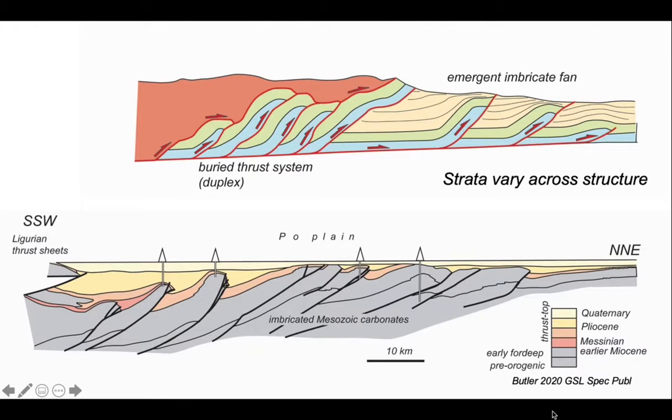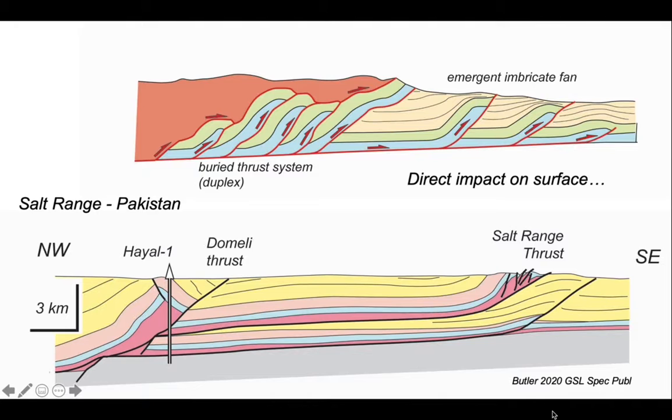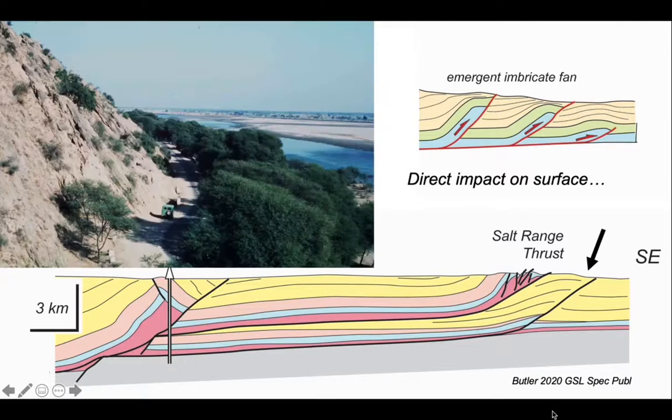So emergent thrust systems directly impact upon surface processes. We can see this also in the front of the Himalayas in the salt range of Pakistan, where the salt range thrust emerges at the present day synerogenic surface. And here is that location where river gravels from the Jhelum River that we can see beyond the trees there, the older ones just a few thousand years old, are now tipped up on the left hand side of that track. They're now tipping at 50 degrees or so. So the emergent thrust system at the Himalayas is involving yesterday's river gravels.